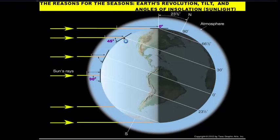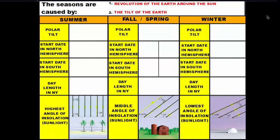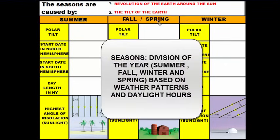Let's summarize this into the seasons. The seasons are caused by two major factors: one, the revolution of the Earth around the Sun changing its position, and two, the tilt of the Earth towards or away from the Sun. As a result we get our four seasons — summer, fall, spring, and winter. Remember, seasons are divisions of the year separated by weather patterns and the number of daylight hours.